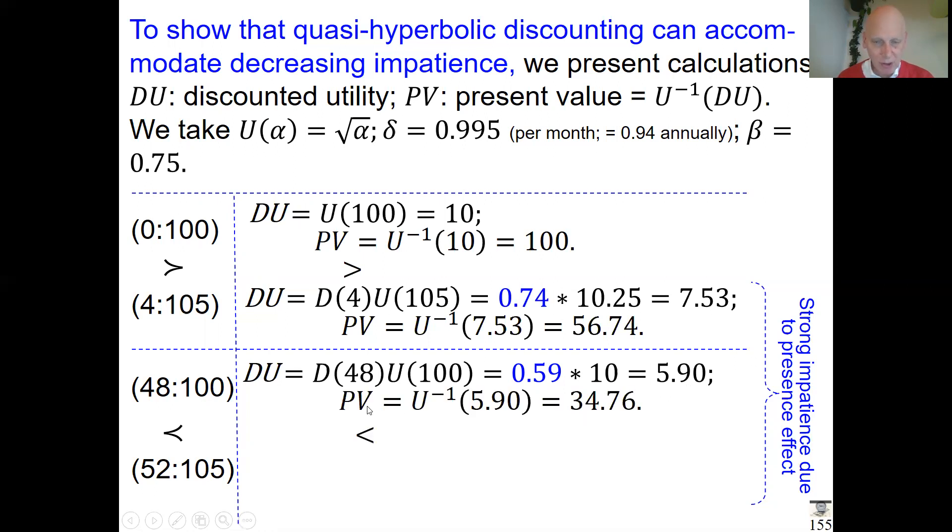The last one is quite similar, and the present value turns out to be 35. Here you see the weights—both are quite low because the presence effect is there, but other than that, not much was happening. These two are quite similar; between these two, there's almost no more impatience.